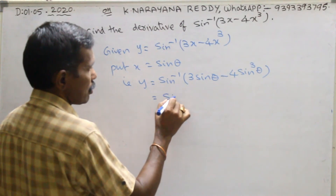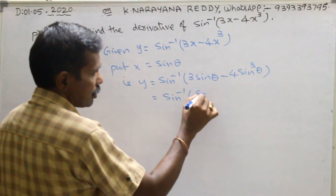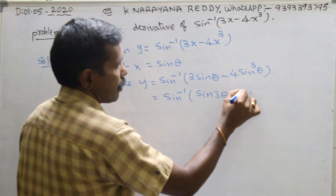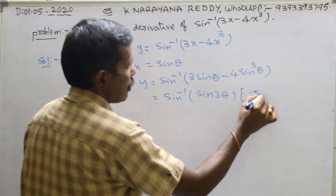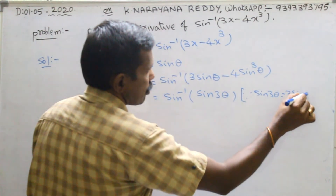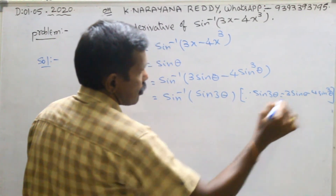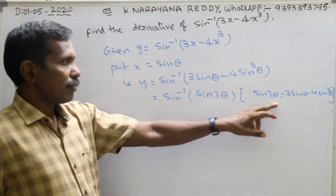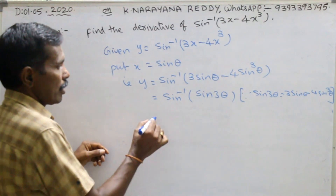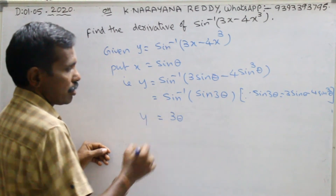Now, sin inverse of 3 sin theta minus 4 sin cube theta is nothing but sin 3 theta — that is the formula. Because sin 3 theta equals to 3 sin theta minus 4 sin cube theta. Using that formula, sin inverse sin goes, and y equals to 3 theta.